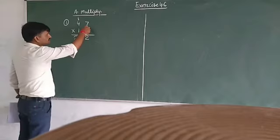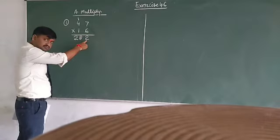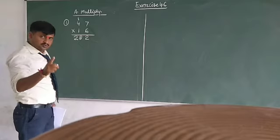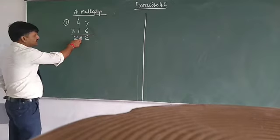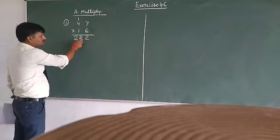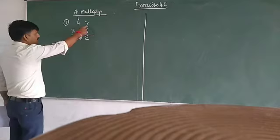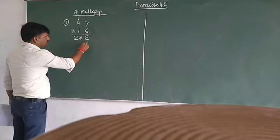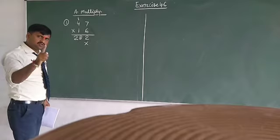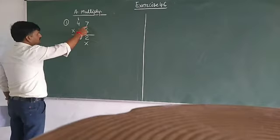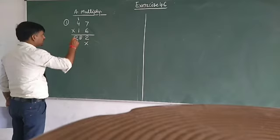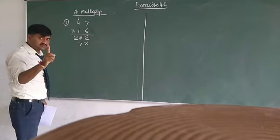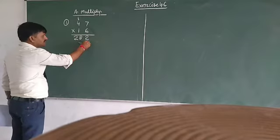Is that clear? 6 × 7 = 42. Write 2 down in the 1s place and carry 4. 6 × 4 = 24, and plus 4 equals 28. Write 28 in this space, so the total number is 282. Then after, cross 1 step. Now multiply 47 by 1. Write 7 down in the 10s place — not the 1s place, because the 1s place is already crossed.